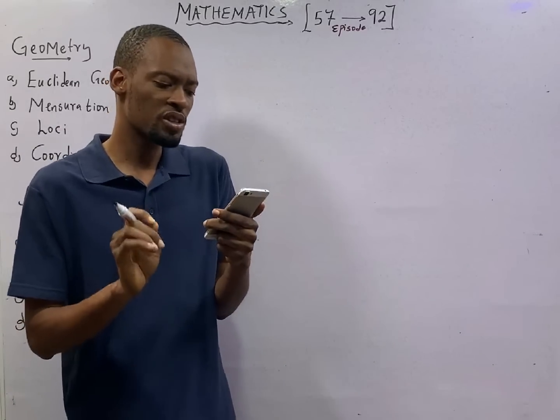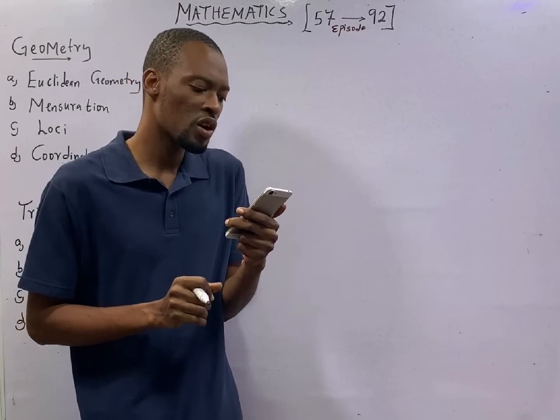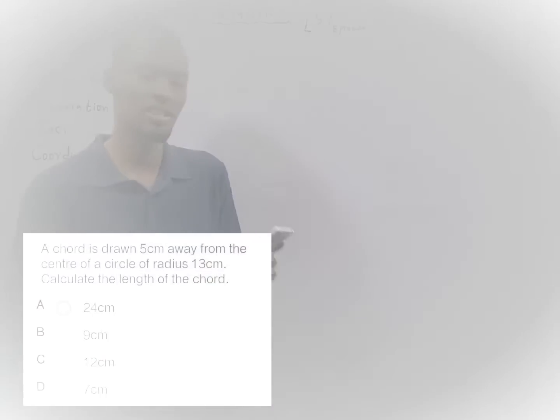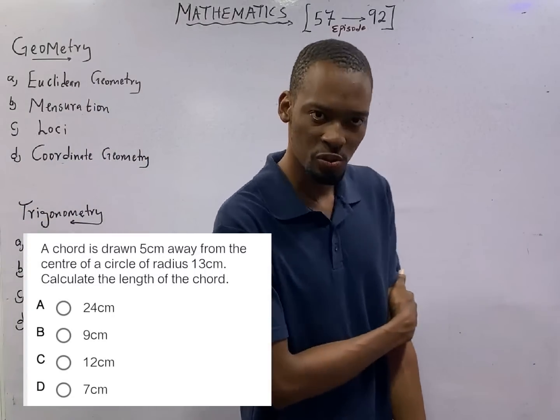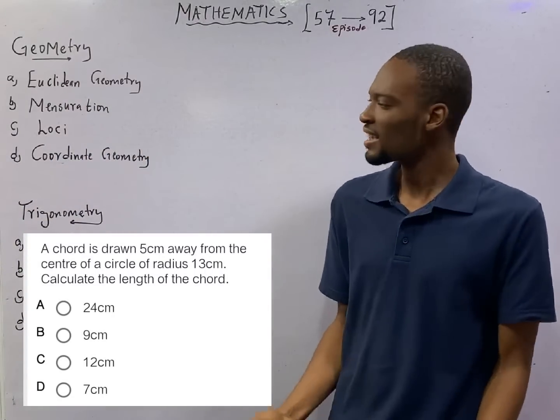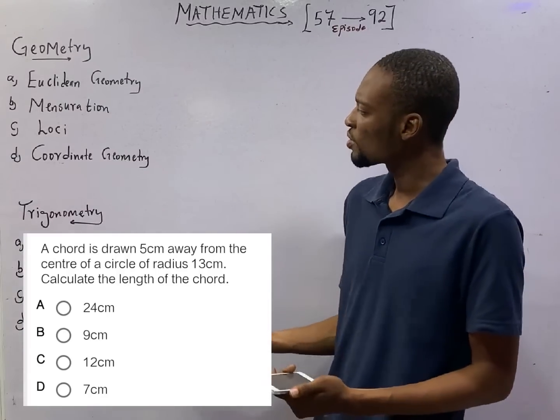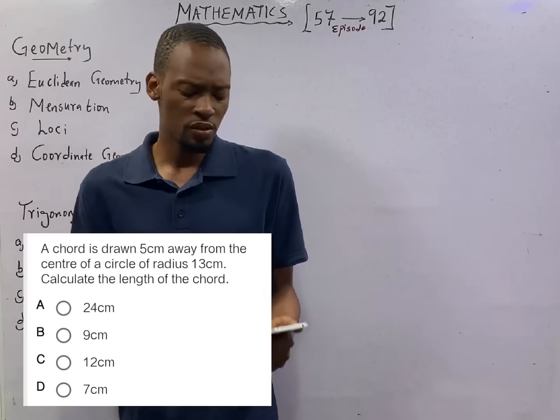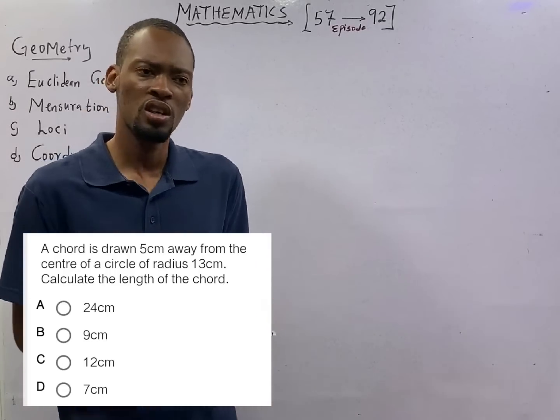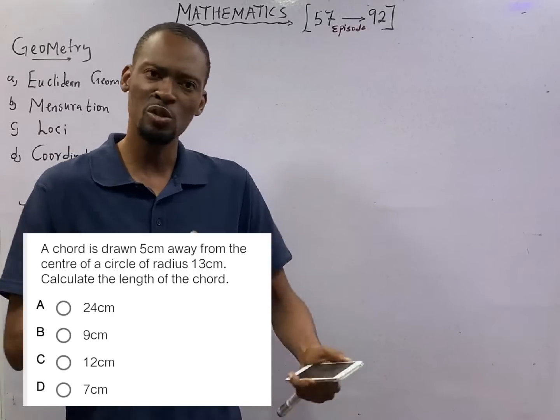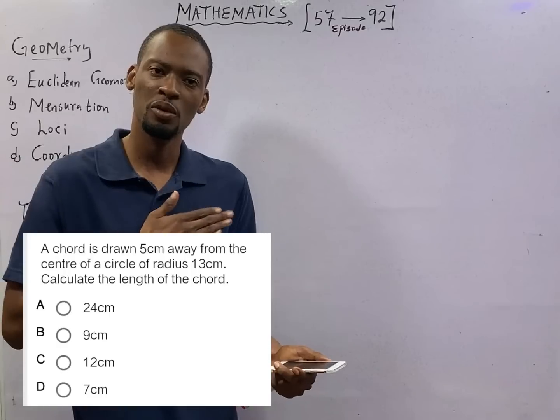A chord is drawn 5 centimeters away from the center of a circle of radius 13 centimeters. Ladies and gentlemen, it's high time you started to enjoy theoretical questions when it comes to circle theory. When reading it, you should understand and draw the diagram. They are usually very easy. Like I always say, keep an open mind.